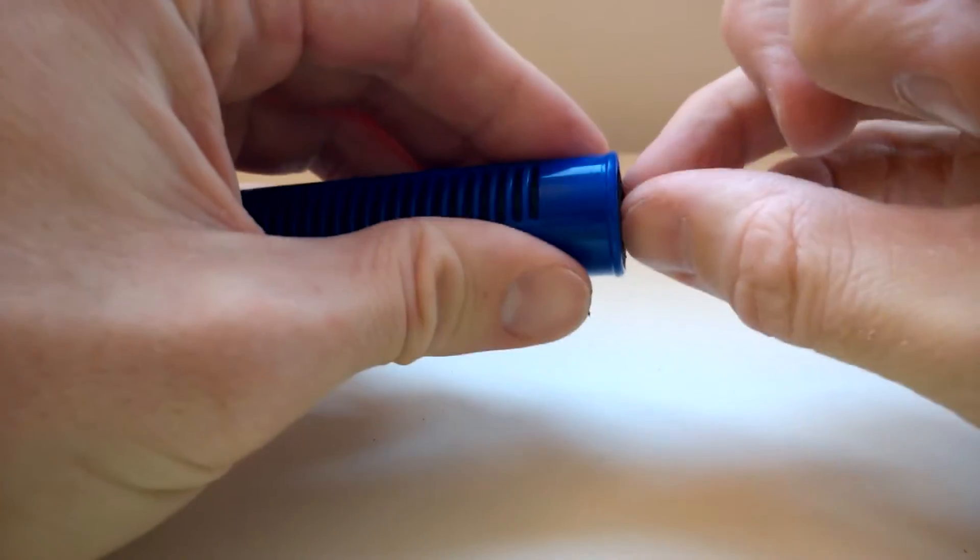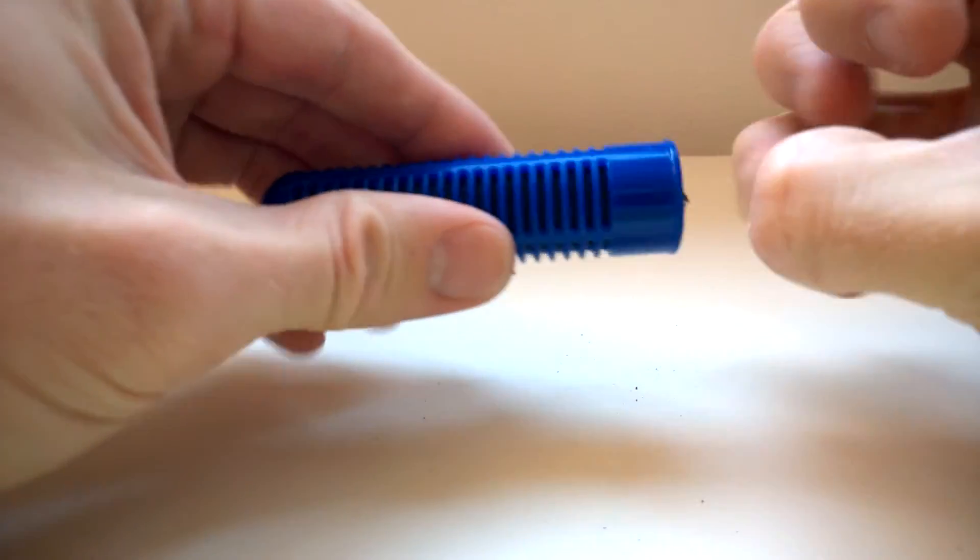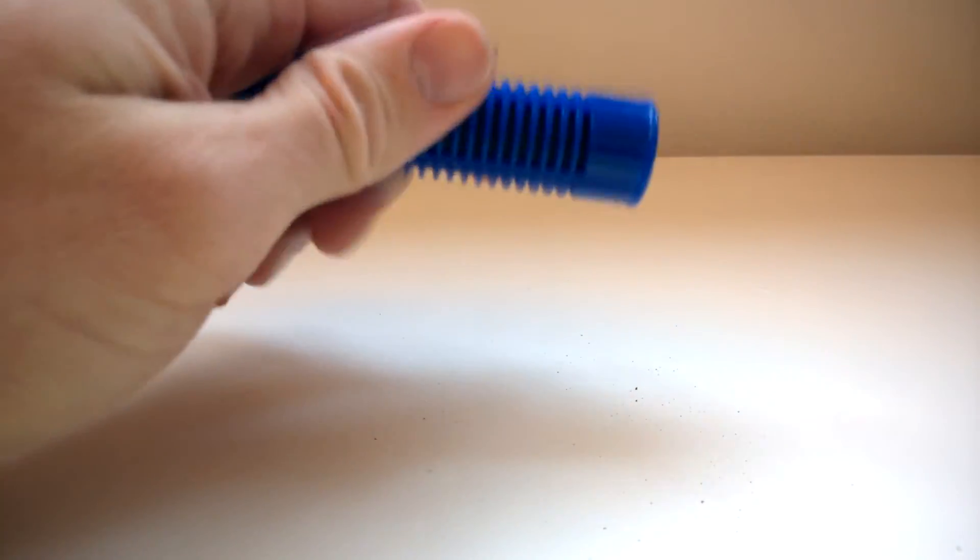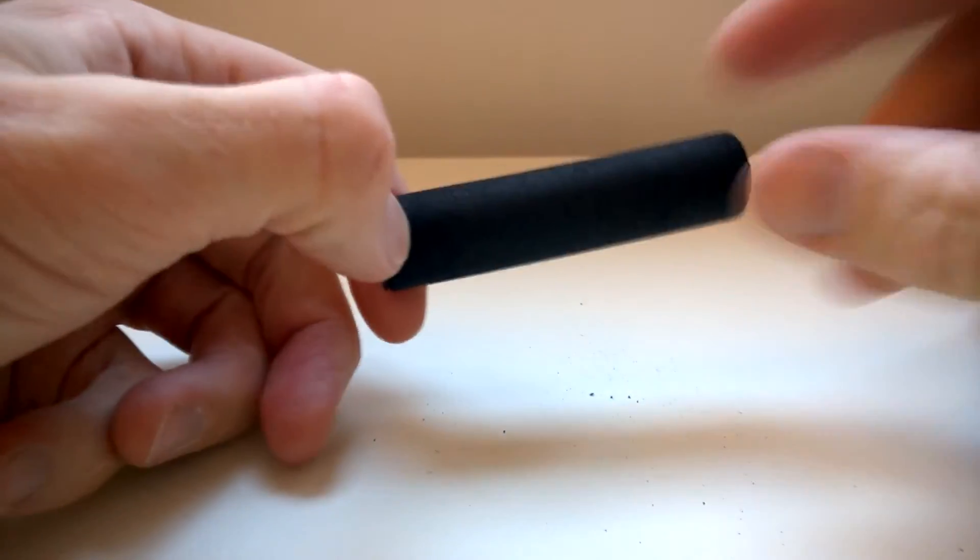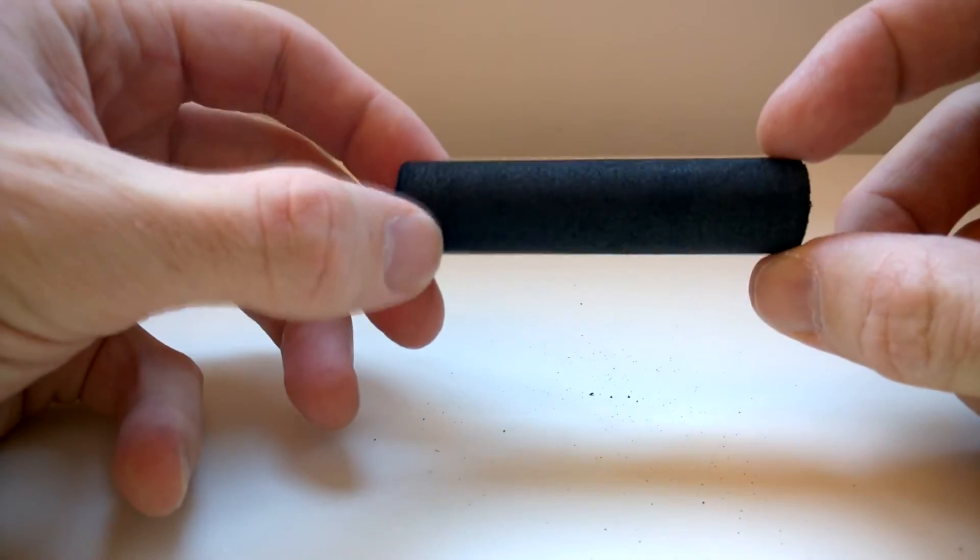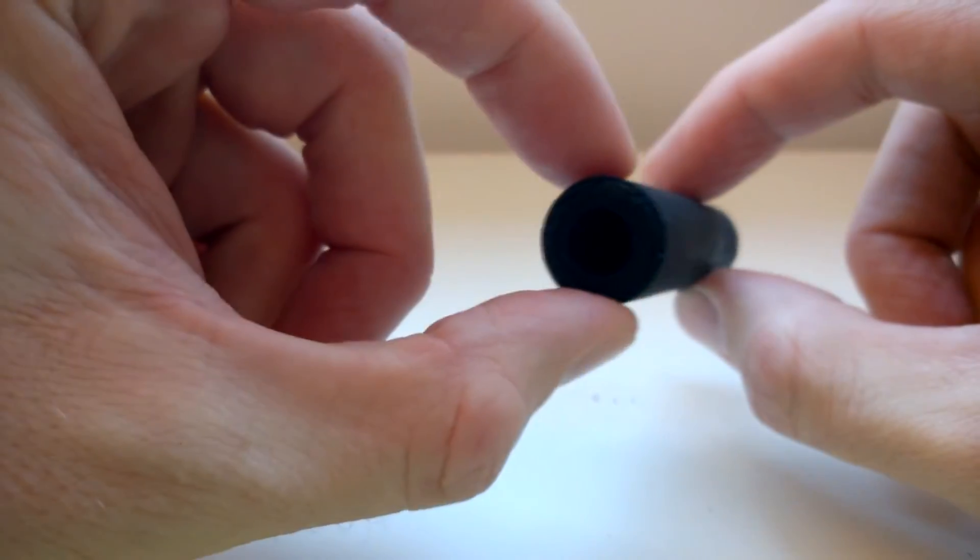So I actually thought this was going to be pieces of carbon. But it's actually not. It's a cylinder of carbon. So there we go, it's a solid piece. Well, it's got a hole in the middle there.